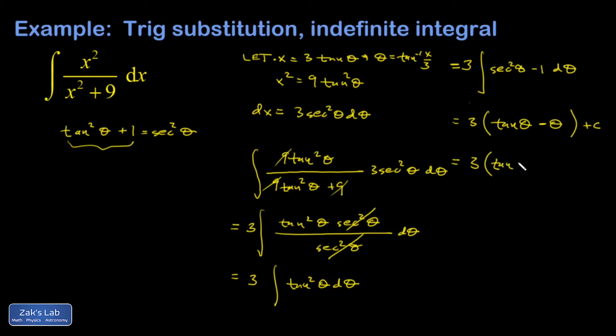So now I have tangent of the inverse tangent of x over 3 minus inverse tangent x over 3 plus an arbitrary constant. Well, the tangent of the angle whose tangent is x over 3 is just x over 3.